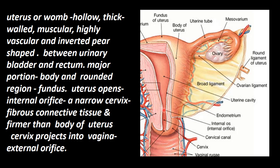The uterus opens into the cervix through a small hole called the internal orifice. The cervical canal is very narrow, and the cervix is made up of fibrous connective tissue — it is firmer than the body of the uterus. The cervix projects into the vagina, and there is a small opening called the external orifice. Through the cervix, the baby will be delivered.